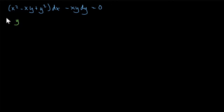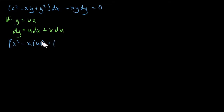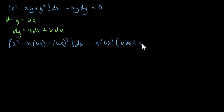Let y equals u times x, so dy equals u dx plus x du. We substitute everything into the given equation: x squared minus (x)(ux) plus (ux)² dx minus (x)(ux) times (u dx plus x du) equals zero.